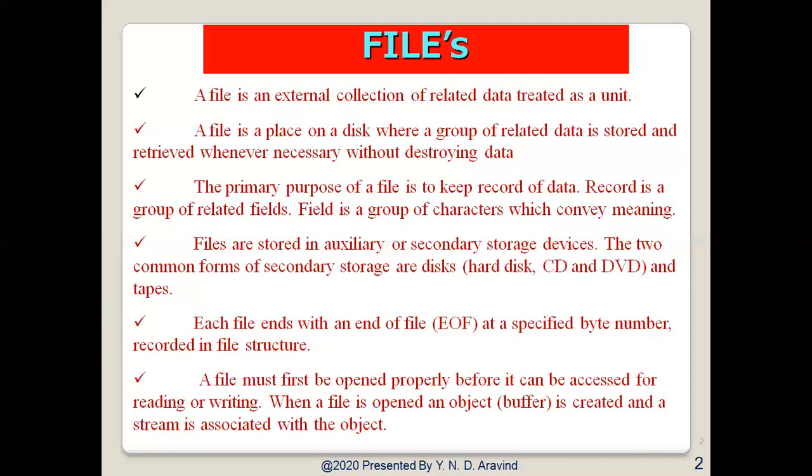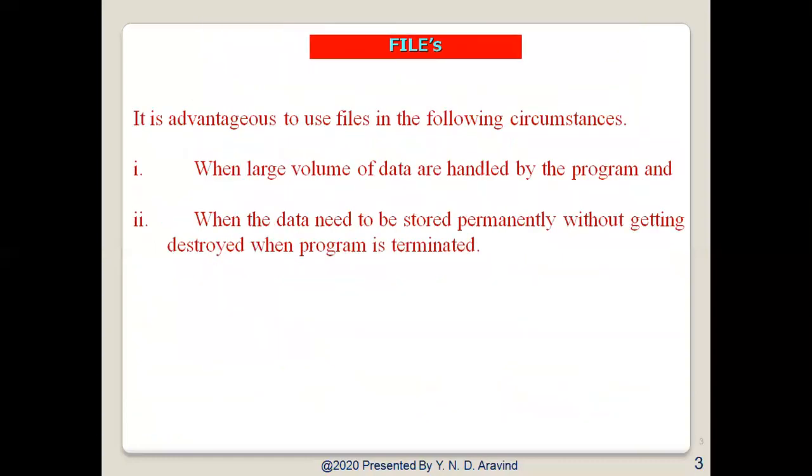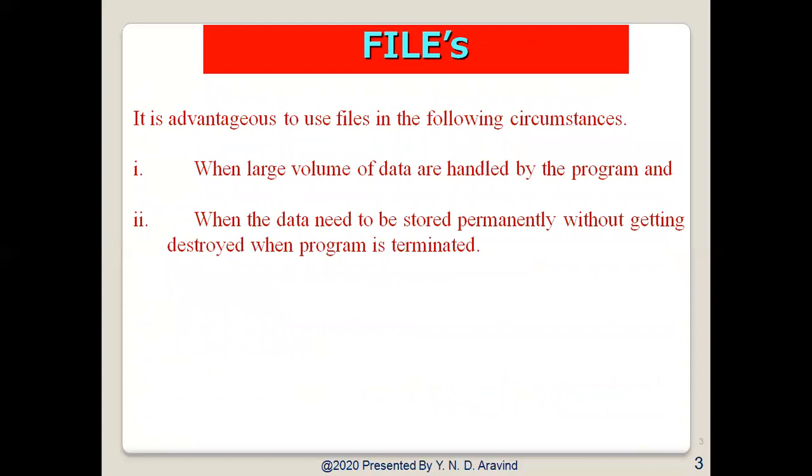Secondary storage devices are generally hard disks, CD drives, DVD drives, and magnetic tapes. Each file stored in secondary storage should end somewhere, so it will have an end-of-file marker. Whenever we want to store a file or perform any operation on these files, the files must first be opened properly so that they can be accessed for reading or writing. After completion of operations on the file, we need to close the file.